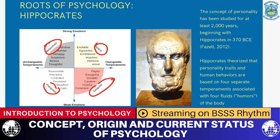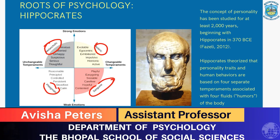All four personality categories were related by Hippocrates to the four fluids or humors of the body: your black bile, your yellow bile, your blood, and finally your phlegm.